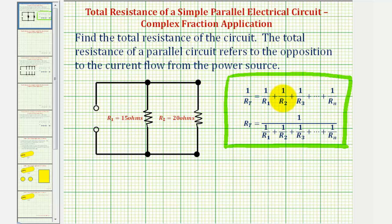Looking at this first equation, we have the reciprocal of the total resistance, or one divided by r sub t, is equal to the sum of the reciprocals of each resistance in the system.